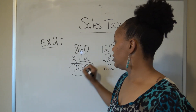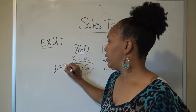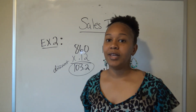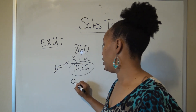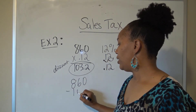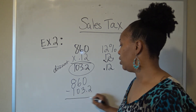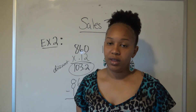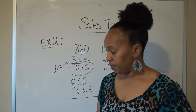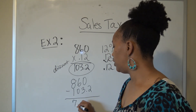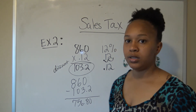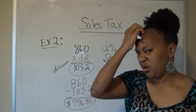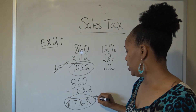Now to find the new sale price of the exercise machine, you subtract that discount amount. In the last example we added, because sales tax is added to the price. But this is a discount, so you take it off. Do 860 minus 103.20 and you get $756.80. The new price of the exercise equipment is $756.80.